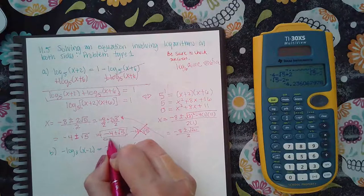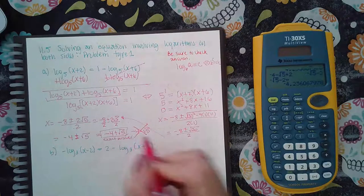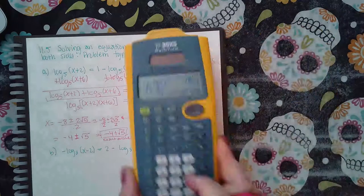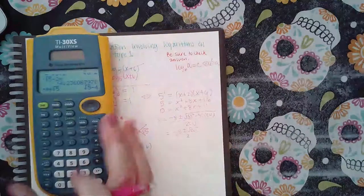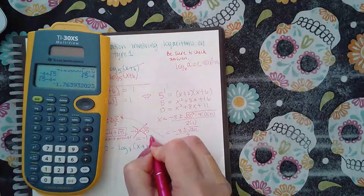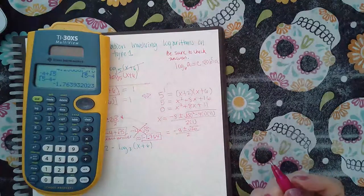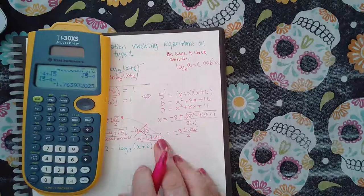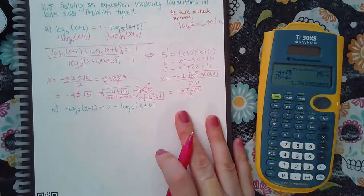Now this is what I would type in if it wants the exact answer. But if it will allow me to give them a decimal answer, or if it specifically tells you to round, then you would round it to negative one point seven six four, or whatever decimal place it says to round it to. I'm rounding it to the thousandths, but it will tell you if it wants you to round, it will tell you what to round it to.